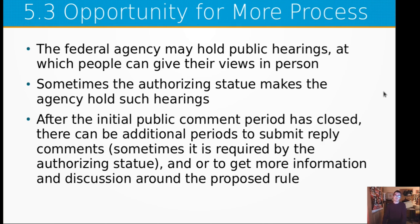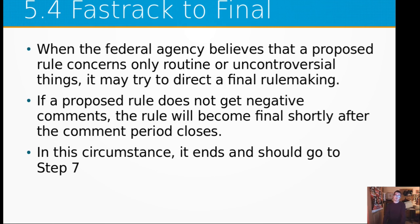Step 5.3 is the opportunity for more process. The federal agency may hold public hearings at which people can give their views in person. Sometimes the authorizing statute requires such hearings. After the initial public comment period closes, they may add additional periods to submit reply comments, and there may even be a full second notice and comment phase. Step 5.4: when a federal agency believes a proposed rule concerns only routine or uncontroversial things, it may try to direct a final rulemaking decision. If a proposed rule does not get negative comments, the rule will become final shortly after the comment period closes — jumping straight to step seven and eight. This is the fast track to final.